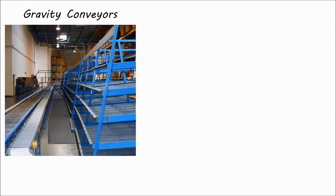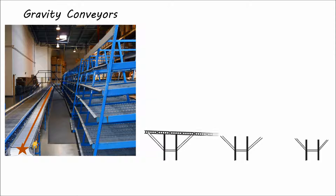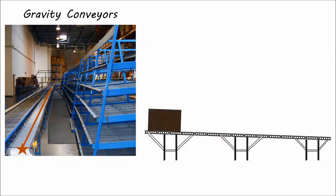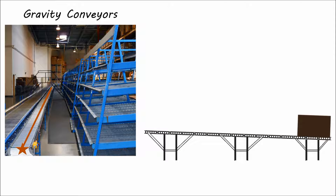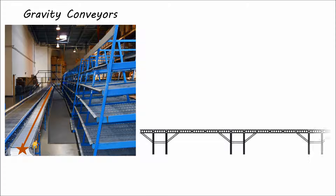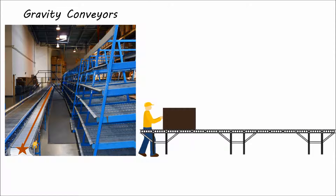Gravity conveyors, such as the one seen here, are made up of a frame and rollers or wheels that help guide the product from point A to point B. They do not utilize power; instead they are pitched so that gravity is able to move product or allow product to be moved manually down the line.